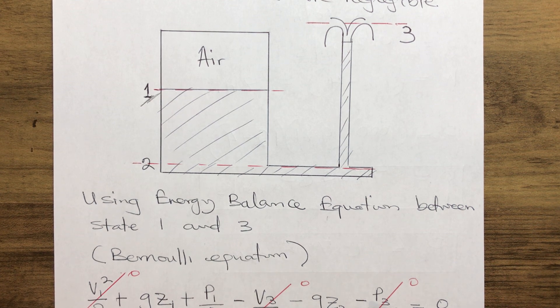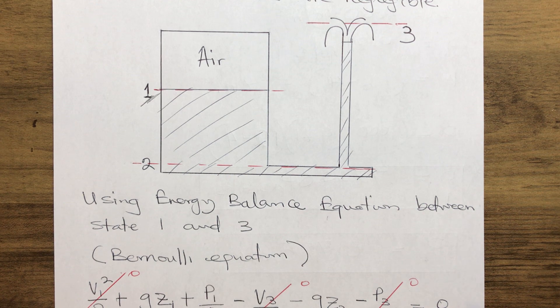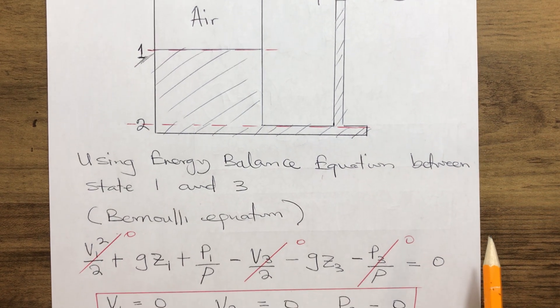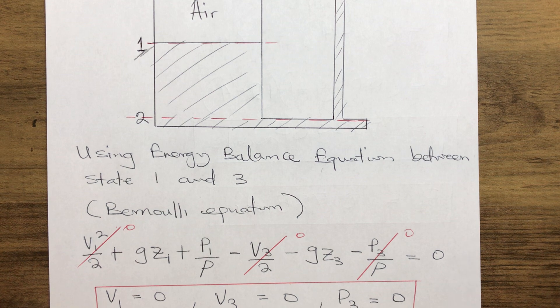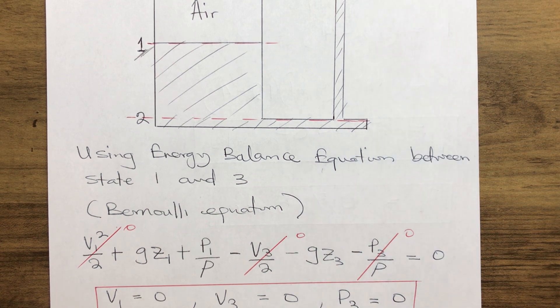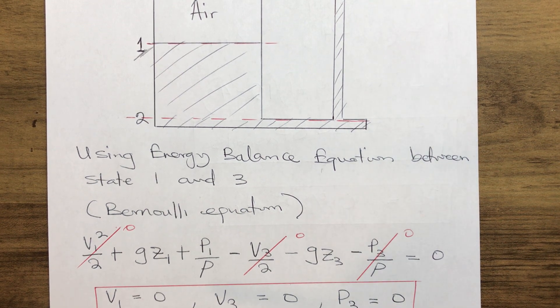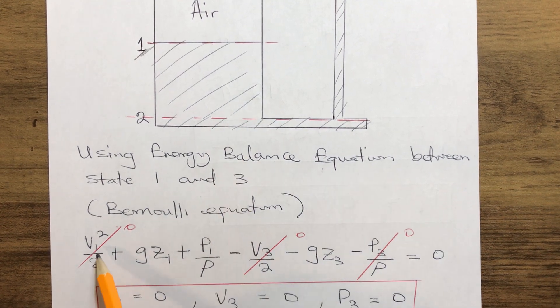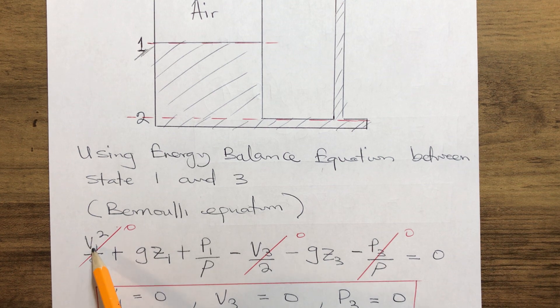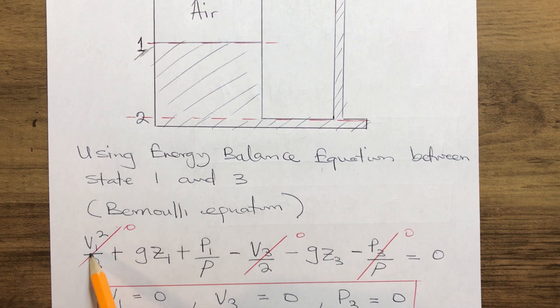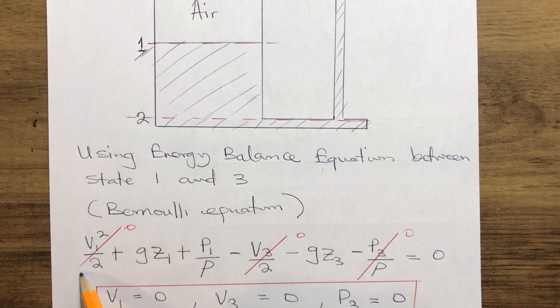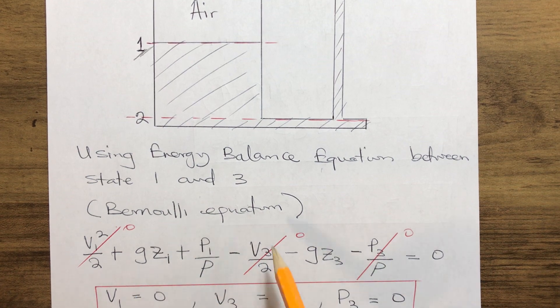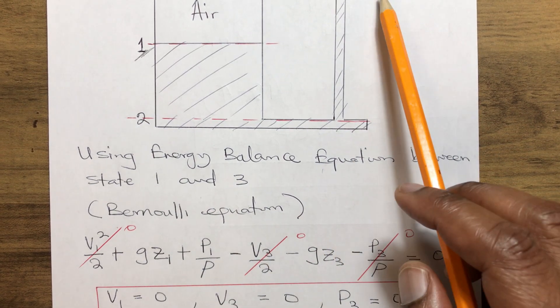Now in order for us to use the energy balance equation, we know that the velocity of the fluid inside the tank will be zero, so that means our v1 equals zero.